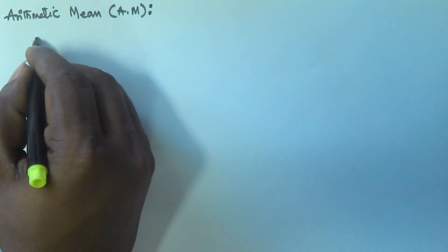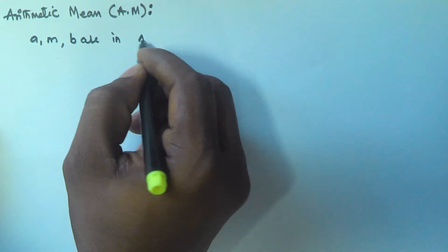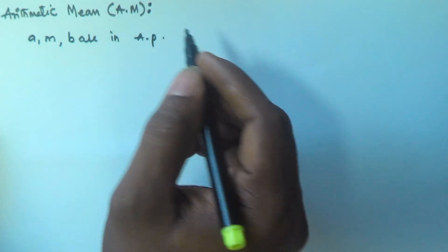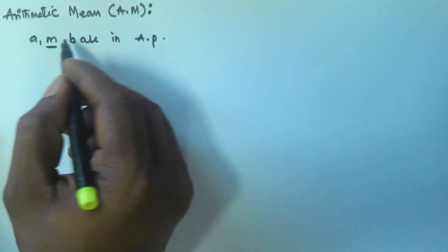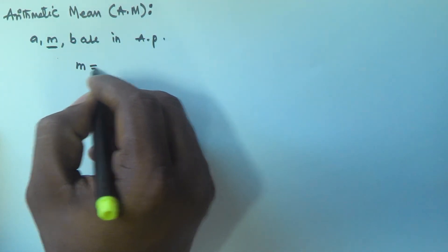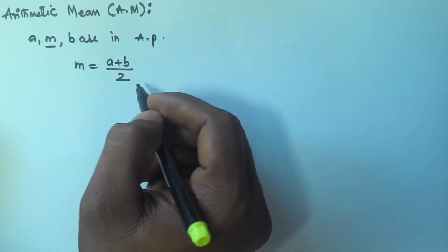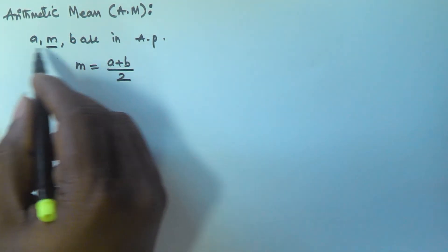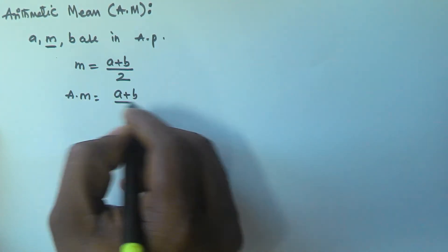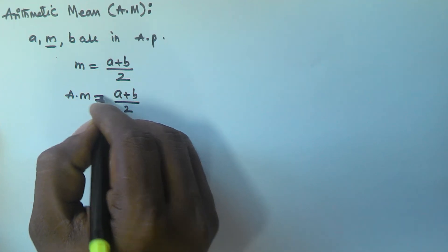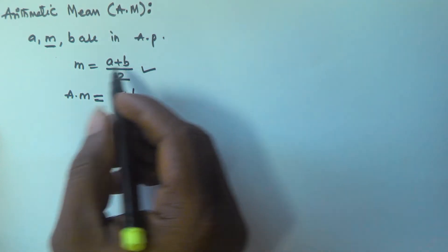For example, if a, m, and b are in arithmetic progression, then m is called as the arithmetic mean of these three numbers. So that means m is equal to (a + b) / 2. The arithmetic mean of a, m, and b is given by (a + b) / 2.